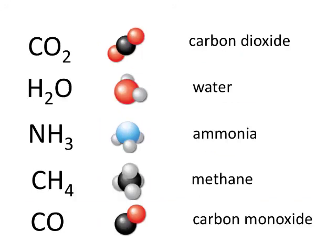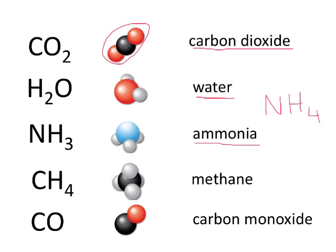Here are some other common molecules that you really should know. You have carbon dioxide — 'di' meaning 2. You can see that the carbon is the black and the reds are the oxygens. Water, of course, is H2O. Ammonia, which is NH3 — the blue is the nitrogen. It's easy to get confused with ammonium, which is a polyatomic ion, NH4 1+. Ammonia, with its shorter name, is NH3.